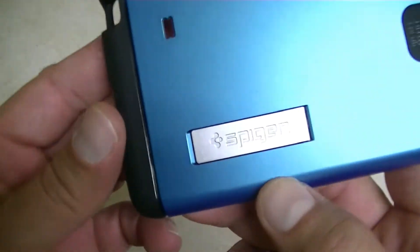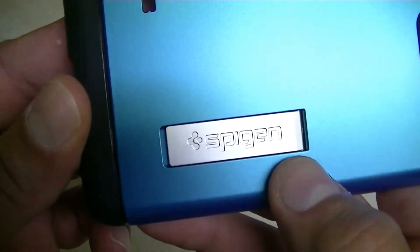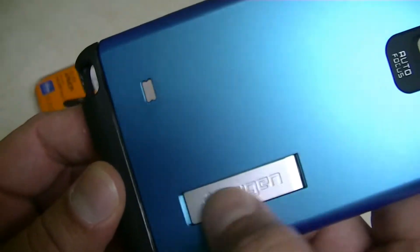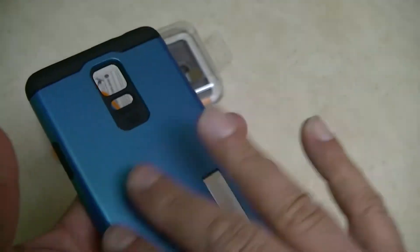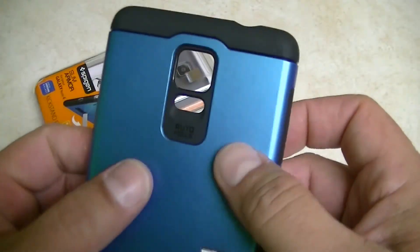And here's the kickstand on the back. As you guys can see, it has the Spigen logo or branding, with the logo right there in silver color. The color of the case is blue, metalized finish.